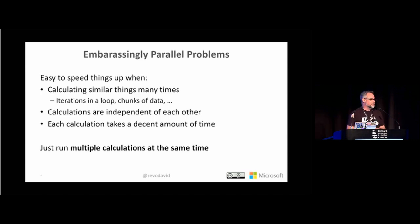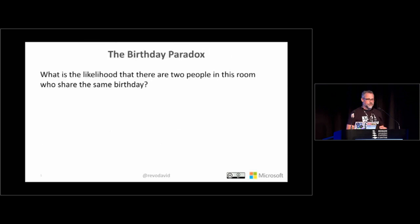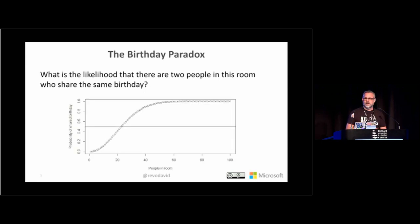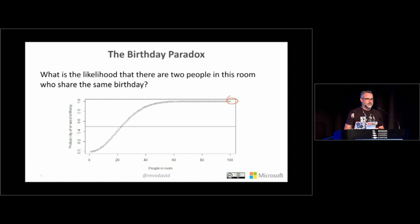Let me motivate that with the birthday paradox — a familiar example from statistics. Given a number of people n in a room, what's the probability that at least two people share the same birthday? You can calculate it for 300 people and it's almost certainly going to happen. For 100 people it's basically 100% probability. With only two people it's a fairly low probability, and the paradox is that with 25 to 26 people there's about a 50-50 chance.